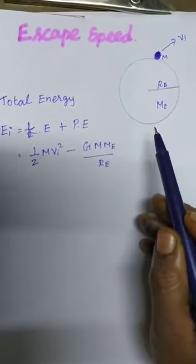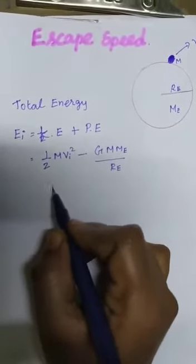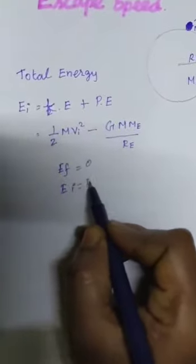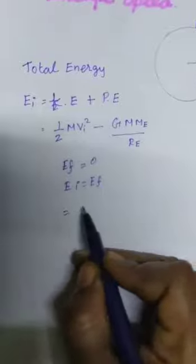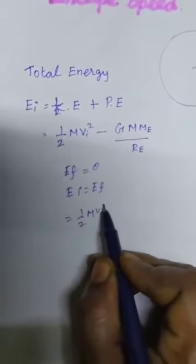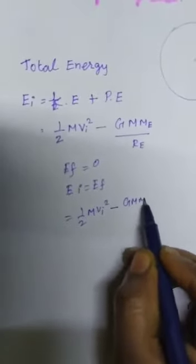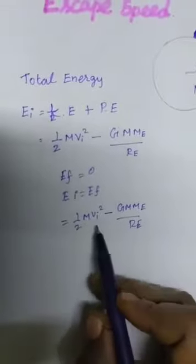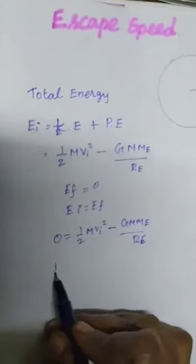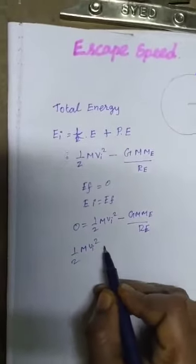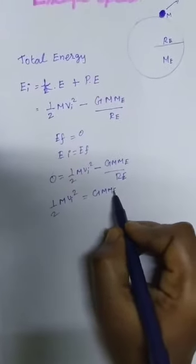Therefore the total final energy of the object becomes zero. This is the minimum speed and energy to escape the object from the Earth surface. So the final energy E_F is equal to zero. According to the law of conservation of energy, E_I is equal to E_F. Since E_F is zero, the initial energy E_I equals kinetic energy plus potential energy: 1/2 M V_I squared minus G M M_E divided by R_E equals zero.